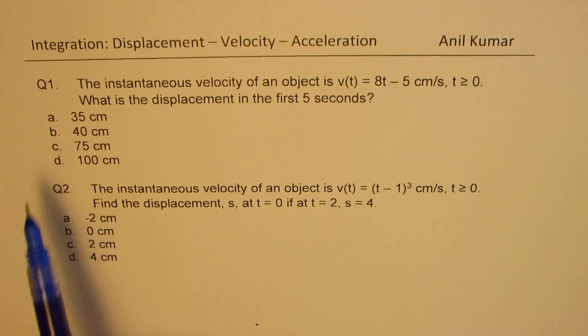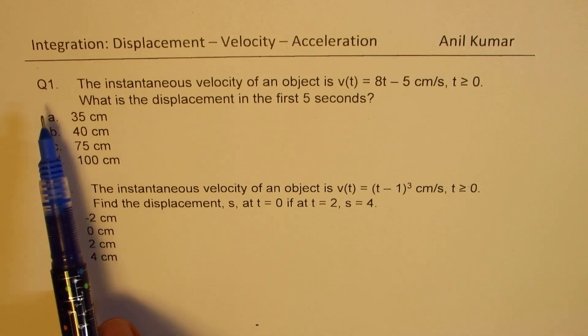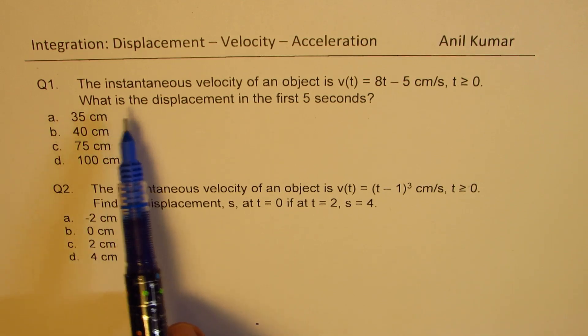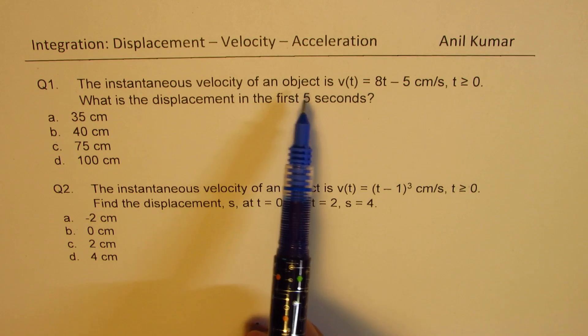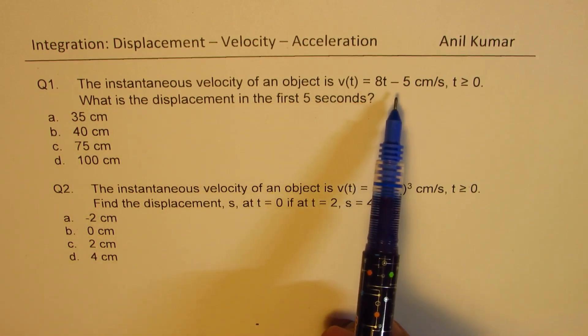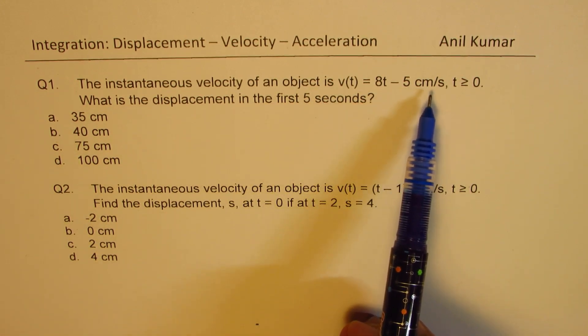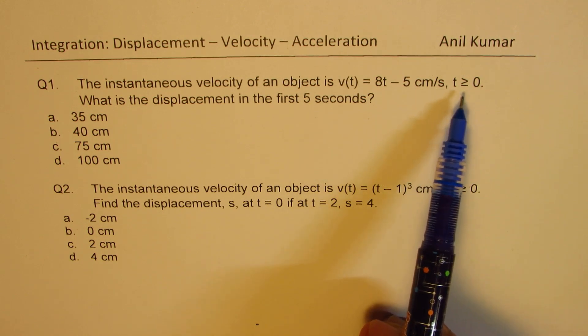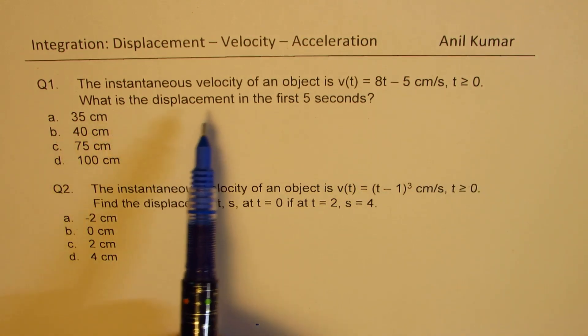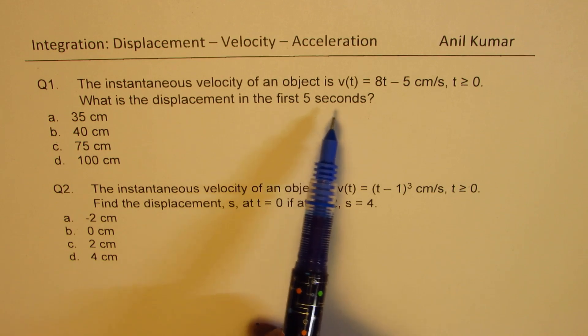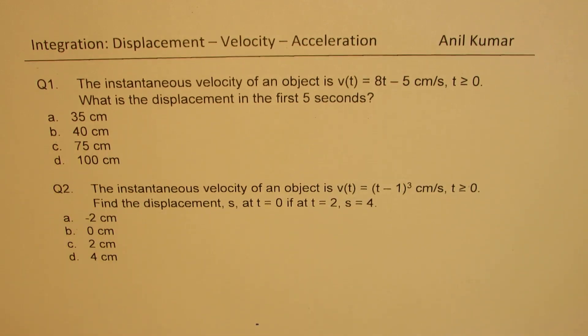Here we'll share with you two questions, multiple choice. Question number one: The instantaneous velocity of an object is v(t) equals 8t minus 5 centimeters per second where t is greater than or equal to 0. What is the displacement in the first 5 seconds? Four options are given to you.